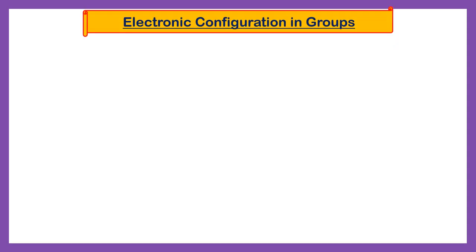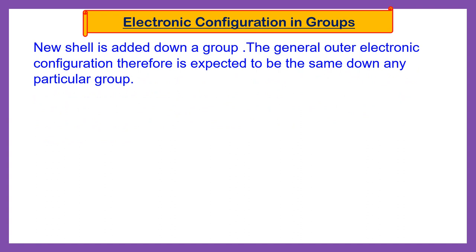Now see what happens in groups. As we move down the group, a new shell is added. The general outer electronic configuration is therefore expected to be the same down any particular group.